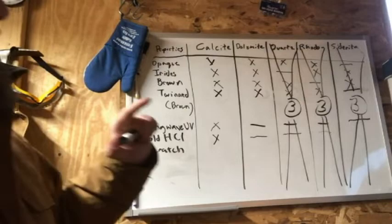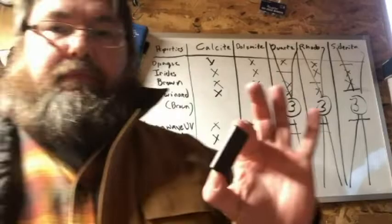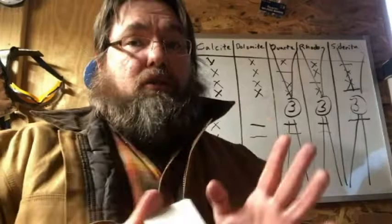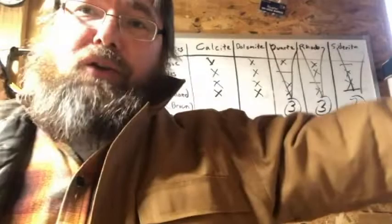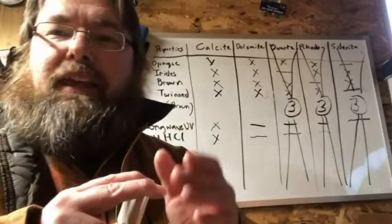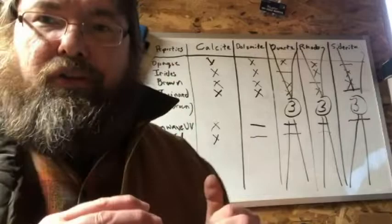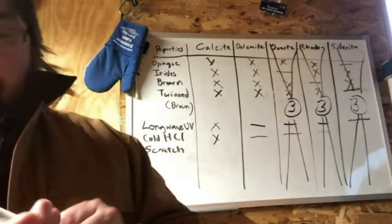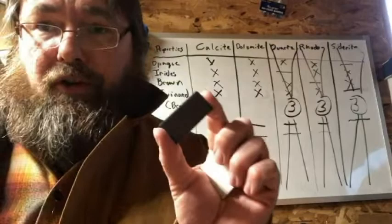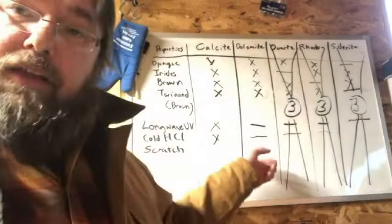Now we are essentially down to two: calcite and dolomite. Our next test is a streak test. Streak plates are basically unfinished porcelain — white and black. Minerals, regardless of their color, have a streak which is the mineral color in powdered form, and it is always one color or a slight range. This is more of a confirmation test — I'm not going to eliminate either of these here because both calcite and dolomite have a white streak.